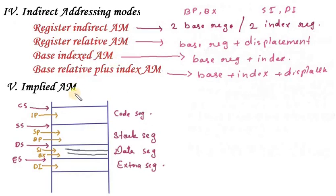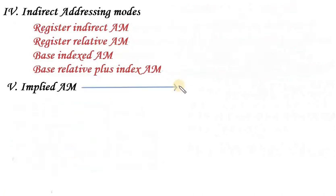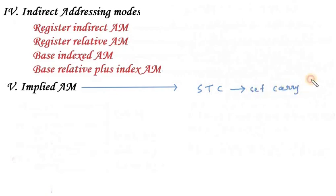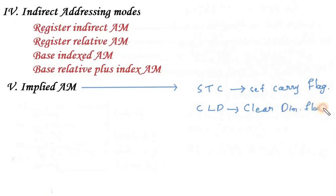Next, let's move on to Implied Addressing Mode, which is simple and similar to the 8085 microprocessor. Here the operands are implied and hence not specified explicitly in the instruction. For example, STC means 'Set Carry Flag,' and CLD means 'Clear Direction Flag.' So we have now covered the complete addressing modes of the 8086 microprocessor.